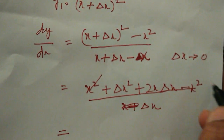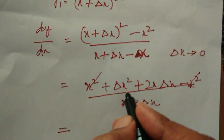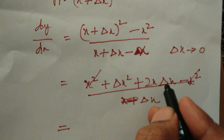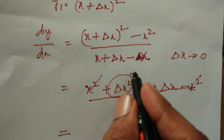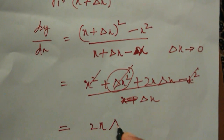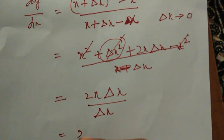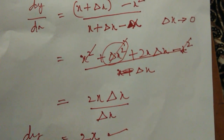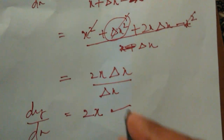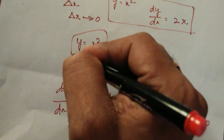So x square and x square cancel. We get delta x square plus 2x delta x. But delta x is very very small — infinitesimal — so delta x square will tend to 0. We are left with 2x delta x by delta x, which is equal to 2x. Therefore, dy by dx is equal to 2x where y is equal to x square.